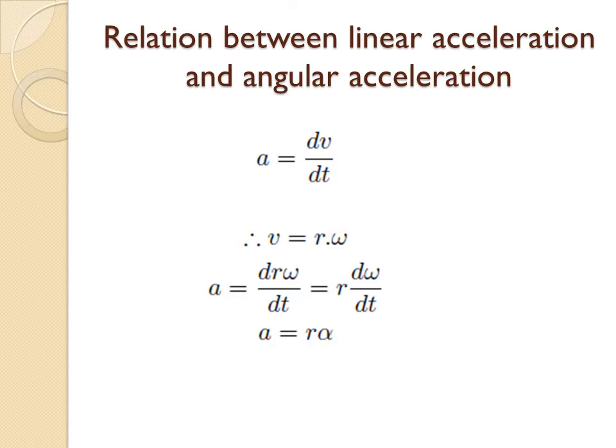Next is the relation between linear acceleration and angular acceleration. Linear acceleration a = dv/dt. Since v = rω, we get a = r·(dω/dt) = r·alpha. So linear acceleration equals the distance r multiplied by the angular acceleration alpha.